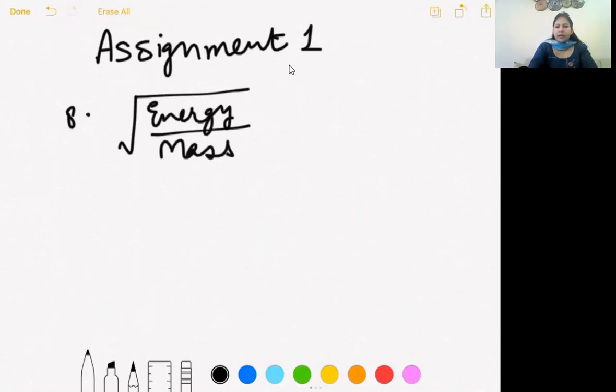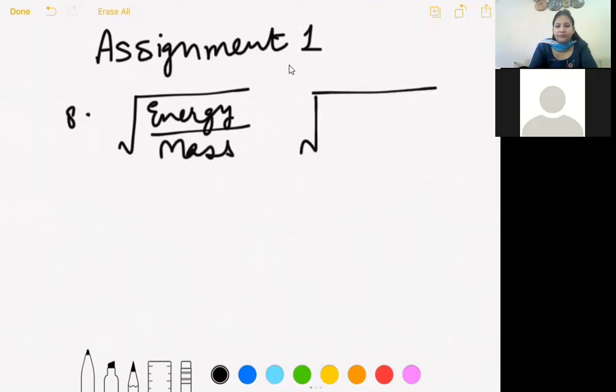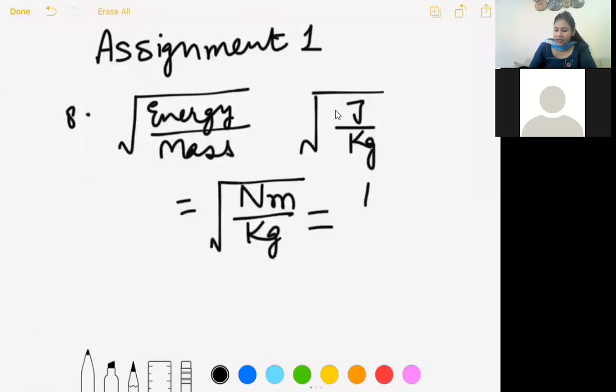So under root, energy over mass ka unit. Unit of energy is joule. And mass ka kg. Further joule can be written as Newton meter. And Newton can be written as kg meter per second square. I've written Newton into meter divided by kg.